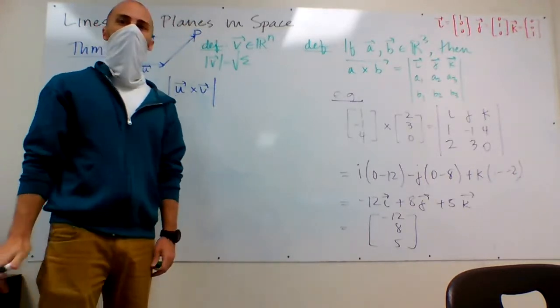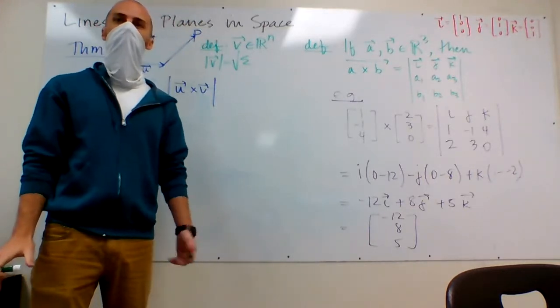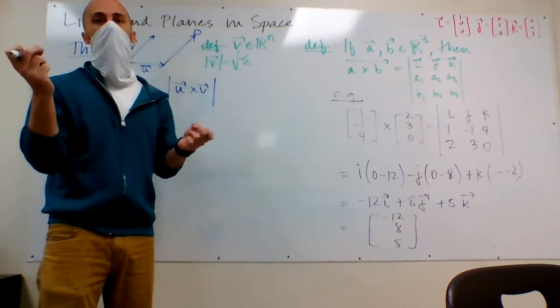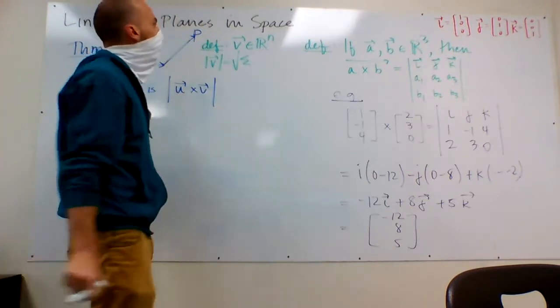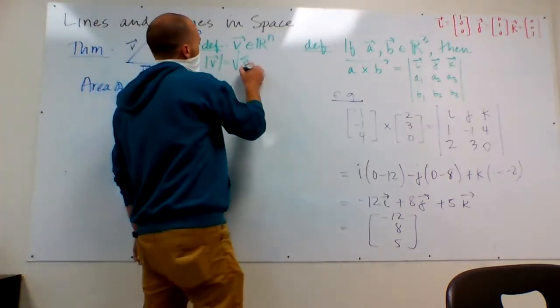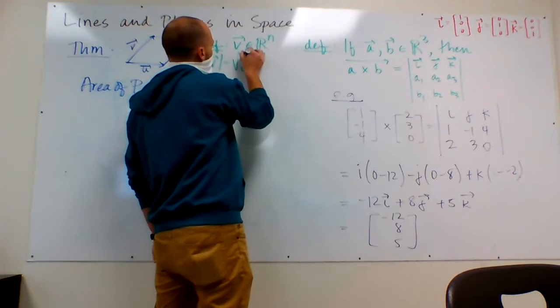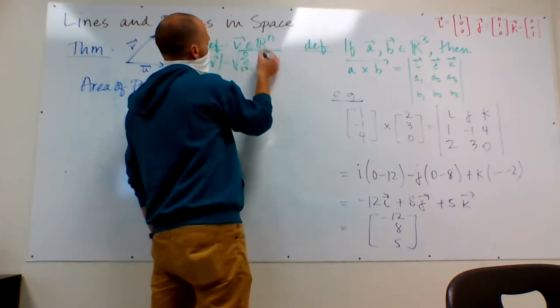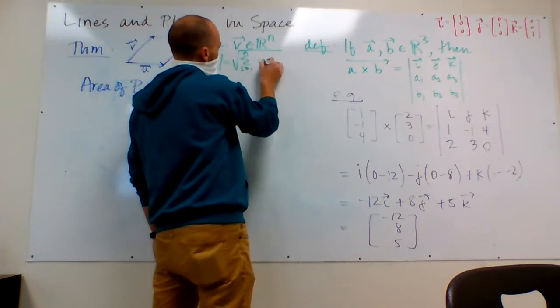Which I might just go ahead and remind you how you find the length of a vector, in case it had been a while or something. If V is a vector in R^n, then the length of V we can find by taking the square root of the sum of the squares of the components. You do the Pythagorean Theorem. So it's the square root of the sum from i equals 1 up to n of V_i squared.